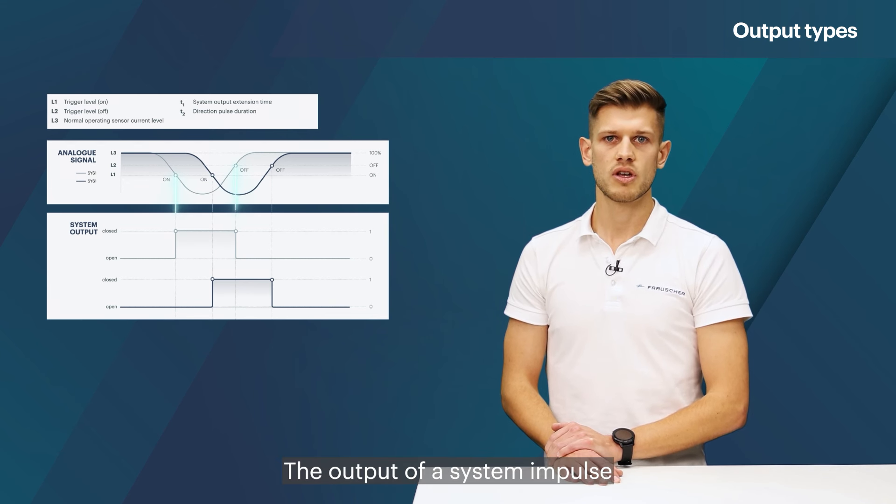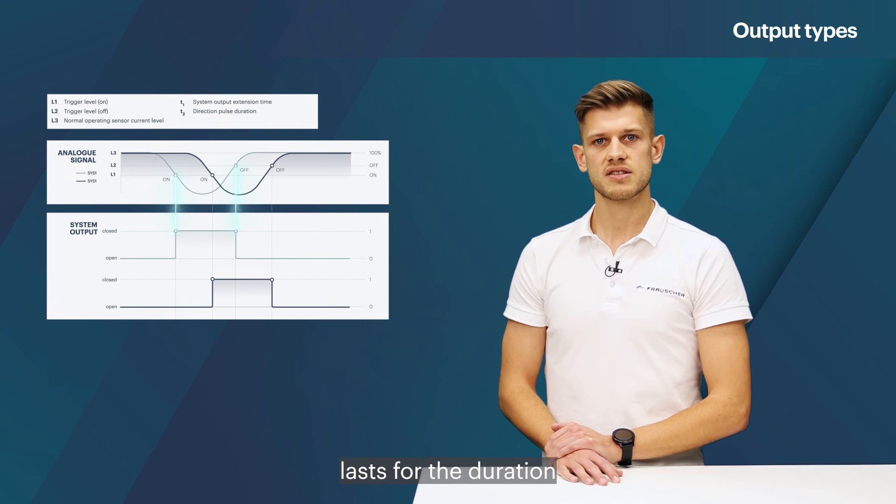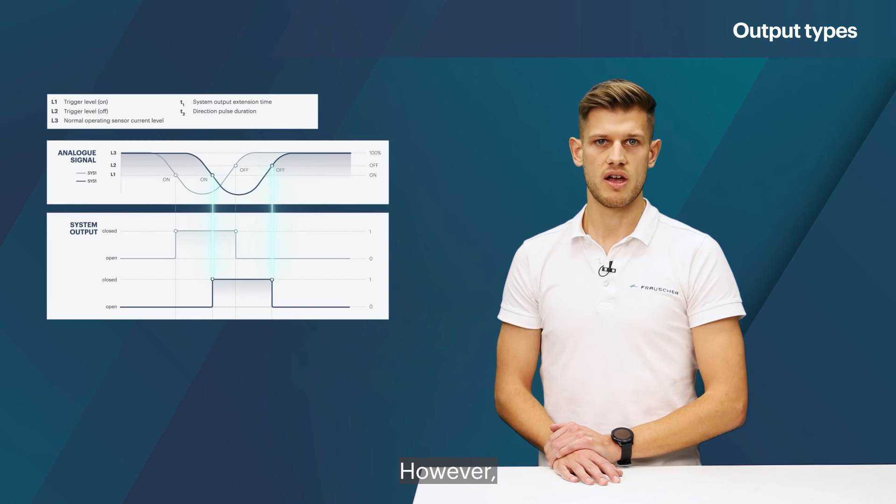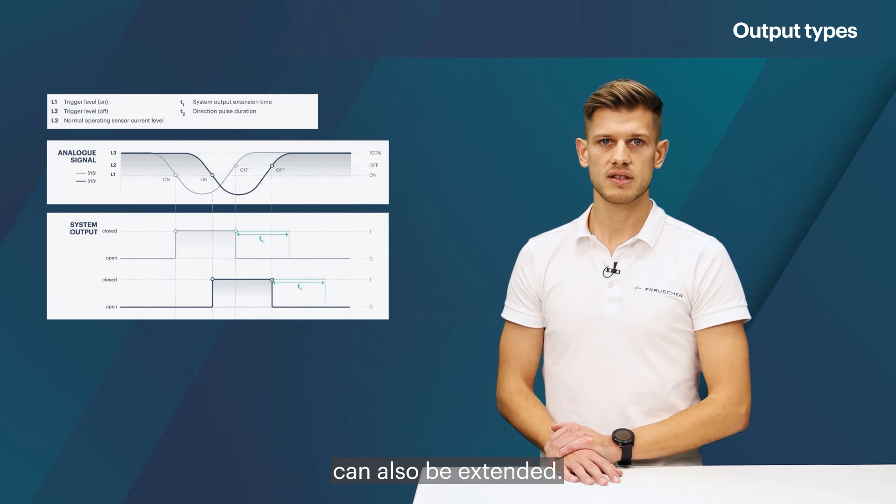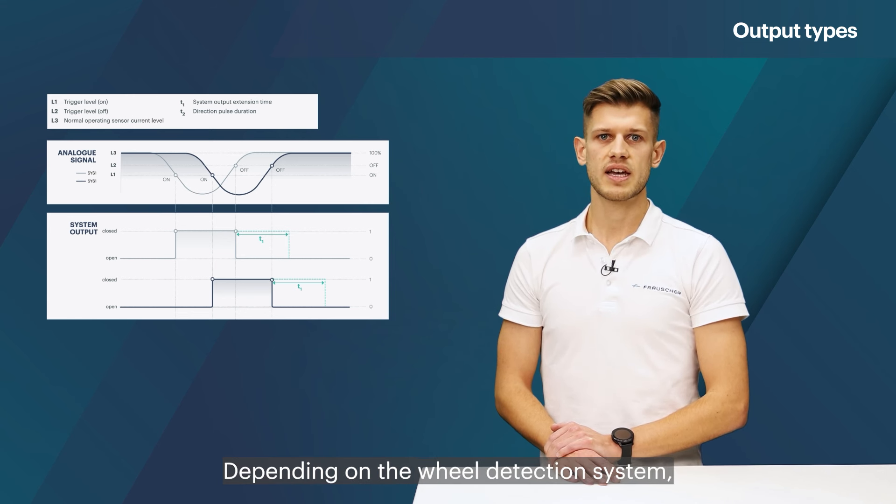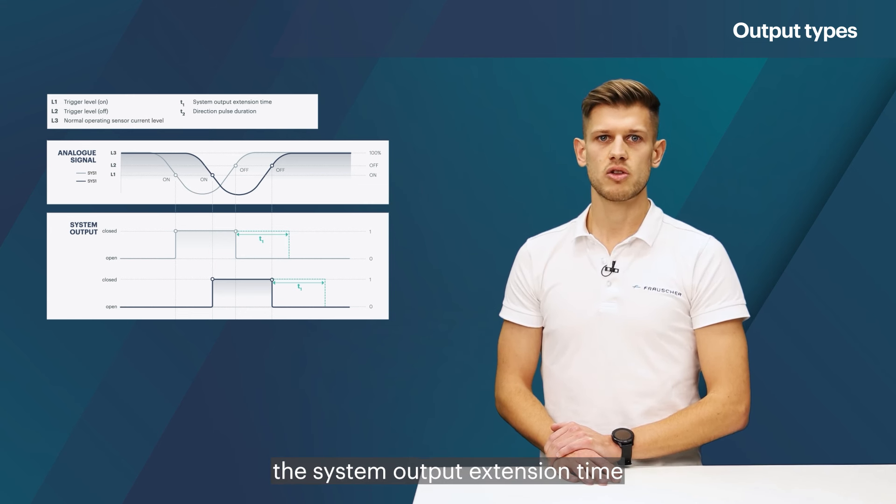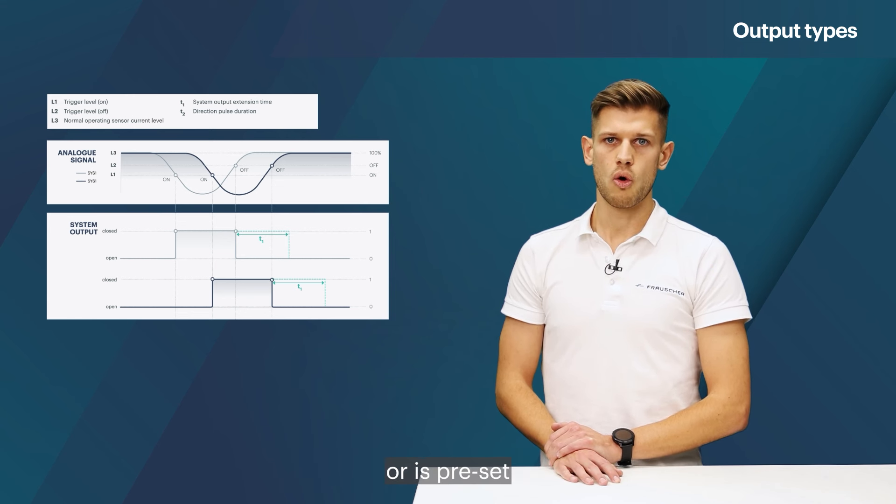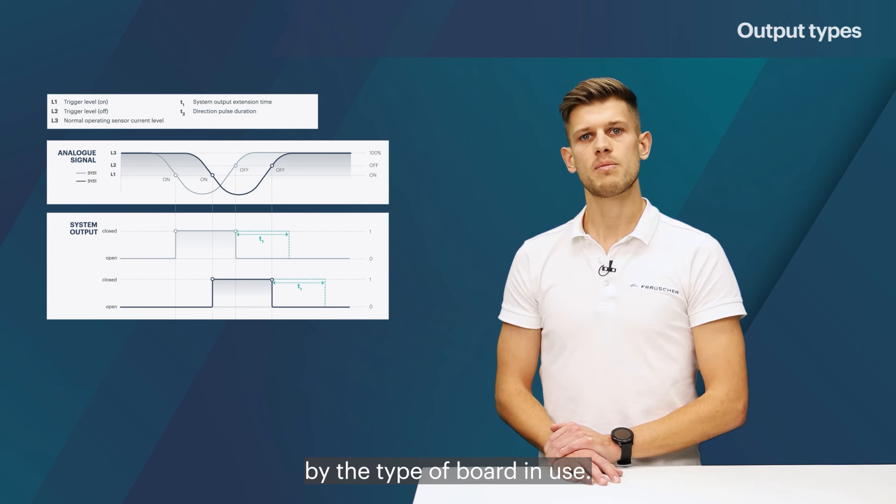The output of a system impulse lasts for the duration of the actual occupancy of the sensor system. However, the length of the impulse can also be extended. Depending on the wheel detection system, the system output extension time can either be manually configured or is preset by the type of board in use.